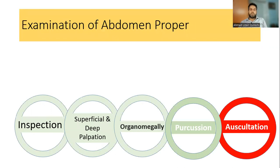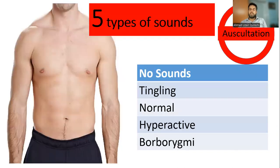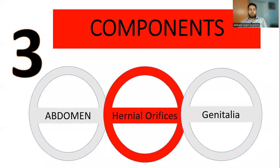Finally, auscultation: listen to the abdomen for bowel sounds, which range from absent, to tinkling sounds, to normal four to five sounds per minute, to hyperactive sounds and borborygmi. Also auscultate for bruits — both renal bruits posteriorly and any abdominal bruits. This completes the auscultation part.